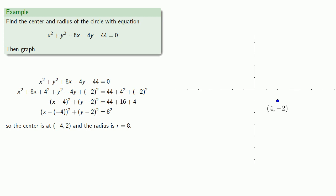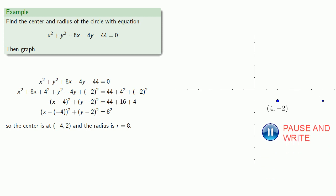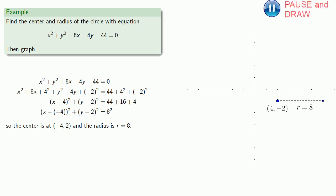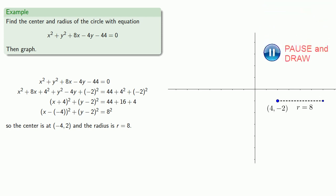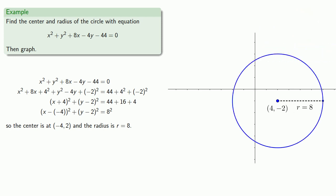Remember, the radius is the distance of every point on the circle from the center. From the center, we go 8 units in any direction. If it's not written down, it didn't happen, so let's label our radius with its length. We'll draw a circle where that length is our radius, and label our graph with the equation.